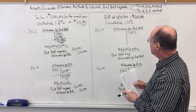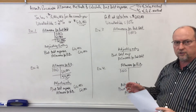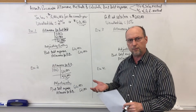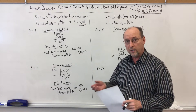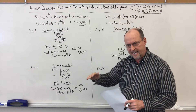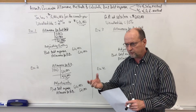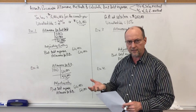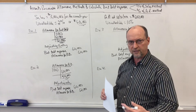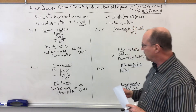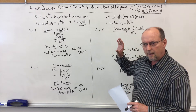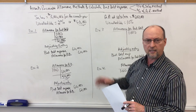The accounts receivable method focuses on the balance sheet. We're trying to measure the net realizable value of accounts receivable, which is total AR minus the allowance for bad debt, and that equals net accounts receivable — what you actually think you're going to collect. With the percentage of accounts receivable method, sometimes called an analysis of receivables, we're measuring the accounts receivable balance on the balance sheet, not focusing on bad debt expense which is on the income statement.